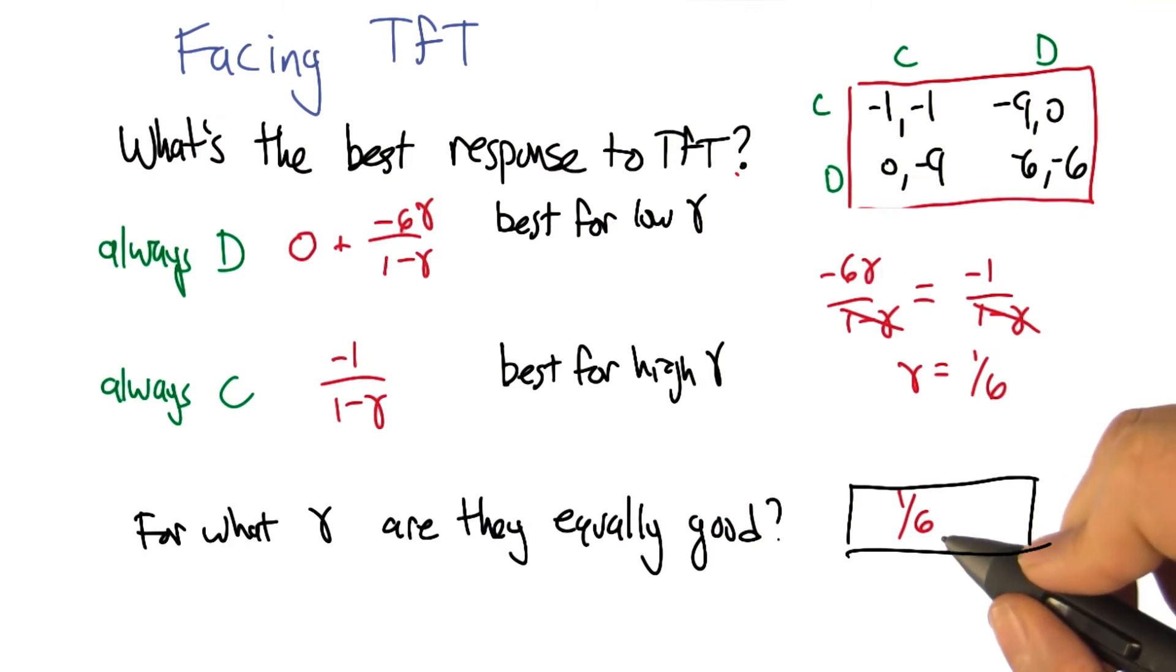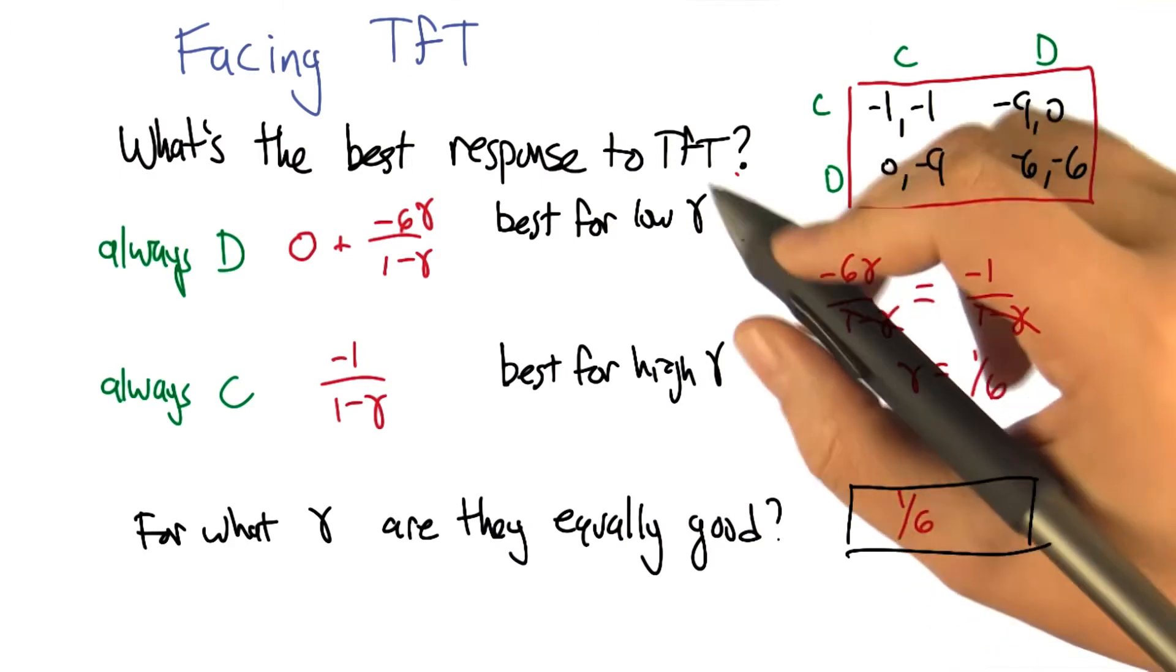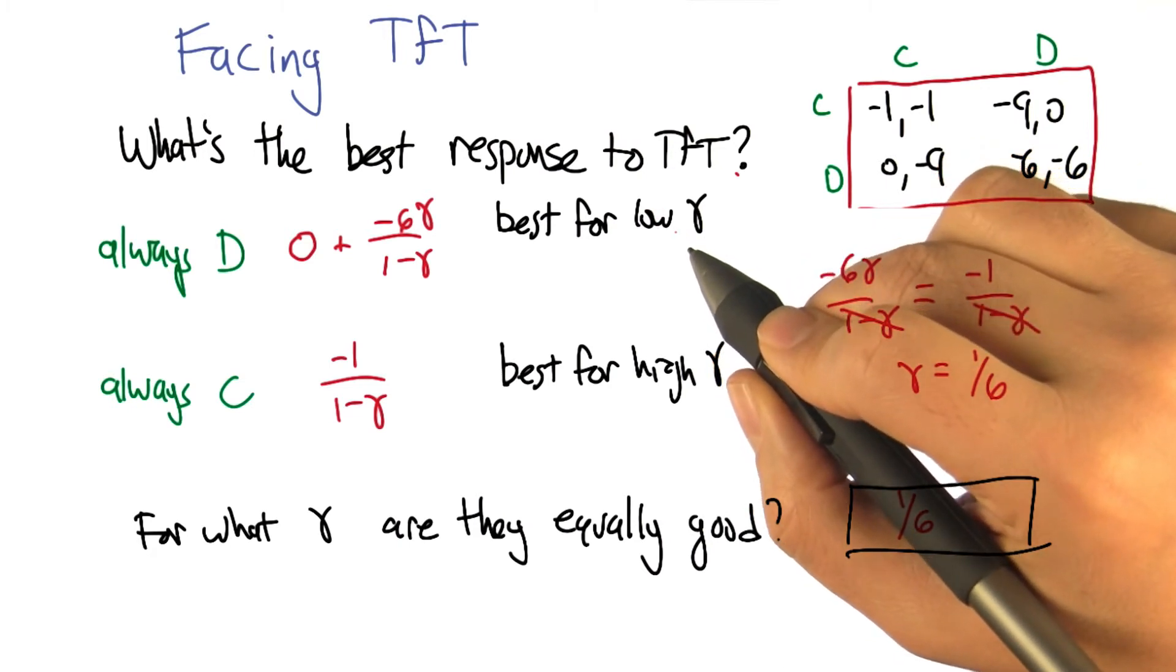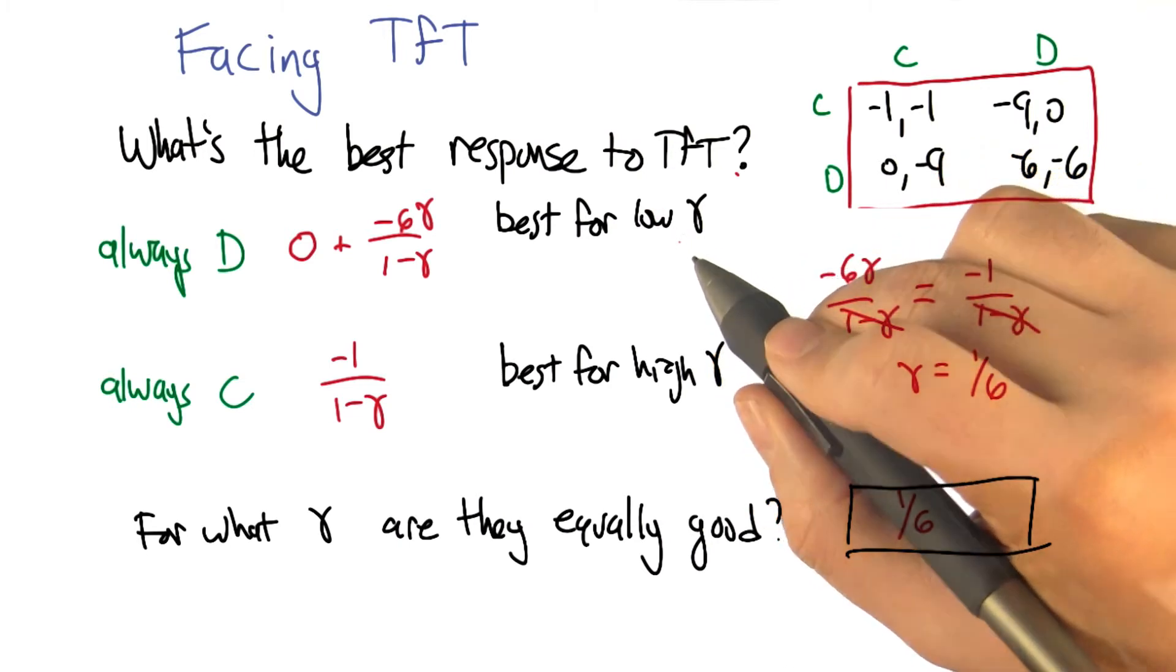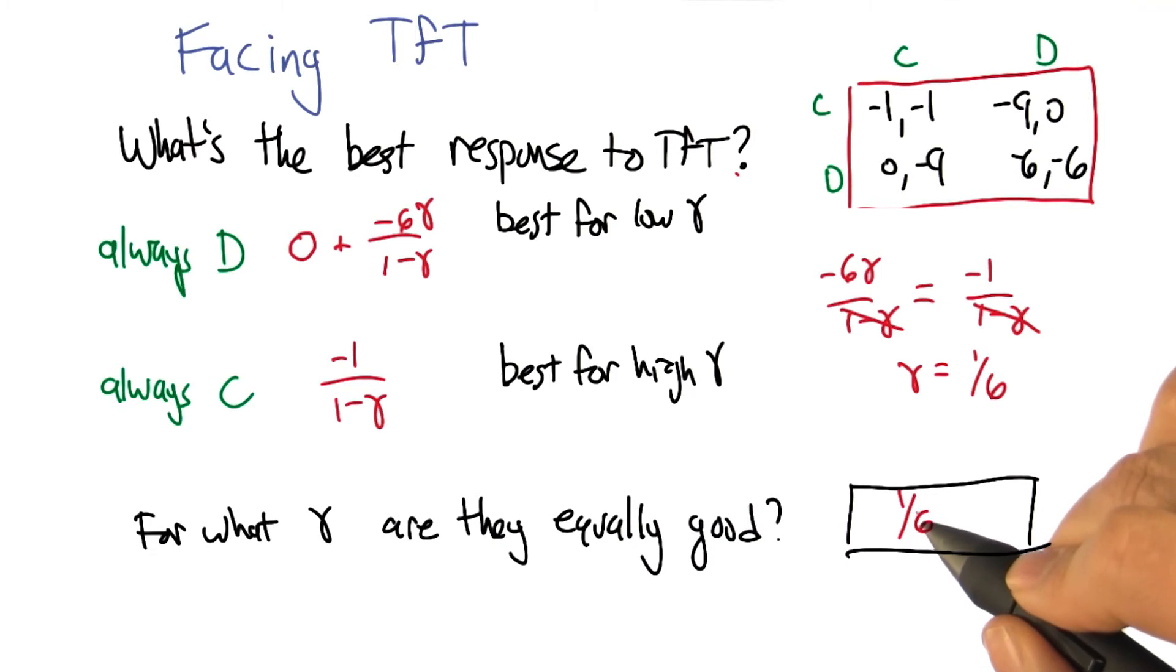So that's interesting, right? It's saying that for gamma values that are less than 1/6th, we should just defect because the game's not going to last long enough for us to form any kind of coalition. But for things higher than 1/6th, a half, 3 quarters, 0.999...